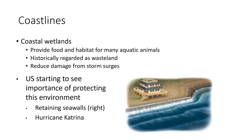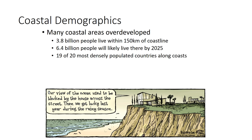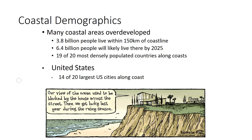We're starting to see the importance of these things. We're trying to restore these ecosystems when possible and get them to grow and replenish themselves. Three point eight billion people live within 150 kilometers of a coastline. Nineteen of the twenty most densely populated countries live along the coast. In the U.S., fourteen of our twenty largest cities are along the coast. As sea levels rise, coastal wetlands and estuaries can be part of the solution to mitigate increased flood damage.